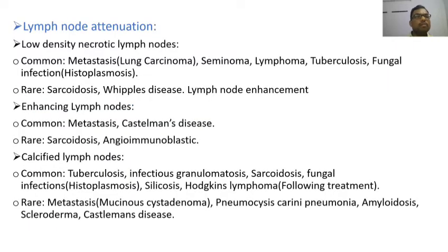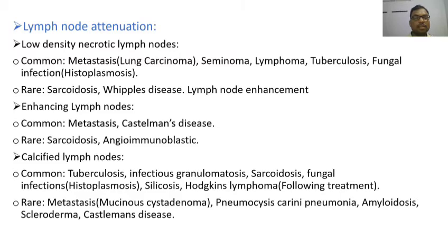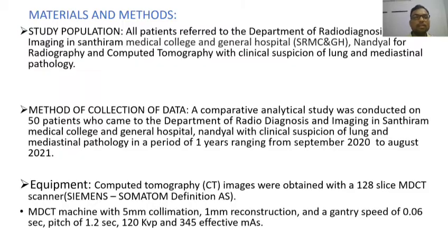Regarding lymph node attenuation, low-density necrotic lymph nodes are commonly seen in metastasis, seminoma, lymphoma, tuberculosis, and fungal infections. Enhancing lymph nodes are seen in metastasis and vascular diseases. Calcified lymph nodes are commonly seen in tuberculosis, infectious granulomatous disease, sarcoidosis, fungal infections, silicosis, and lymphoma.